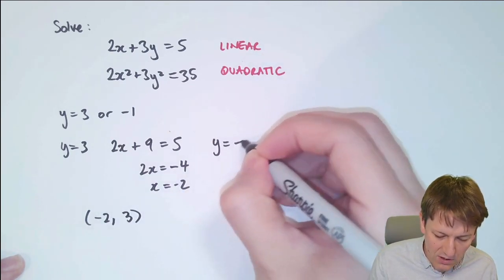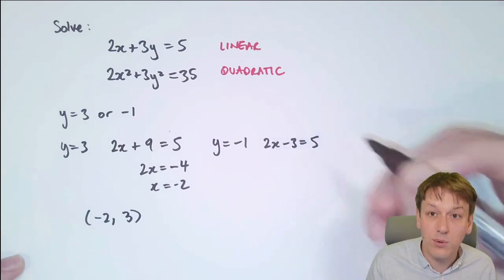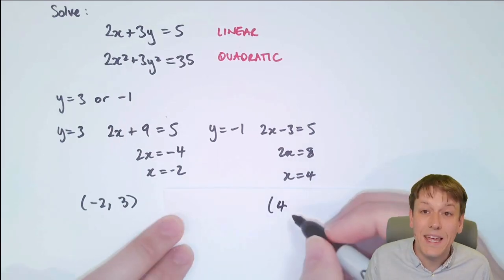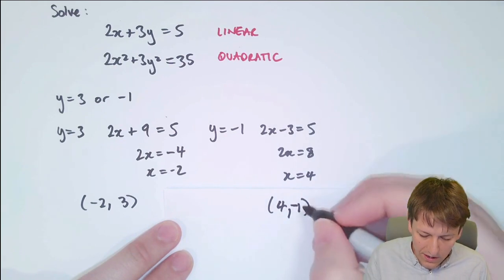And if I substitute in y equals minus 1 instead, I'm going to get 2x minus 3 equals 5. So that's 2x equals 8, and x equals 4. So we get the other solution, which is 4 and minus 1.